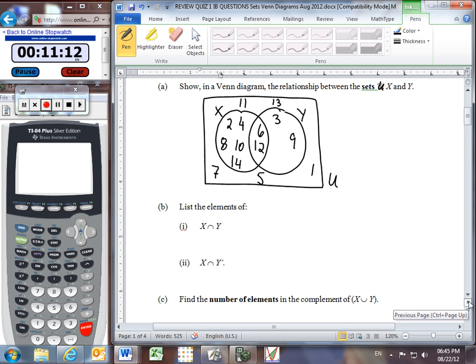So part B asks me to list the elements of X intersect Y. That's now really easy because I've drawn all the numbers already. And so that's going to be the set, so you'll see my curly braces, including the elements of 6 and 12.